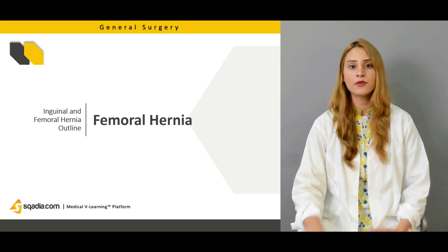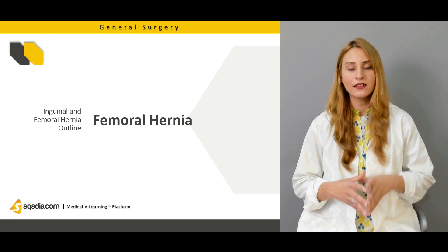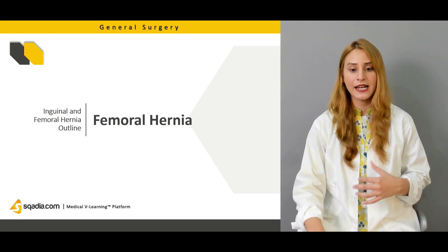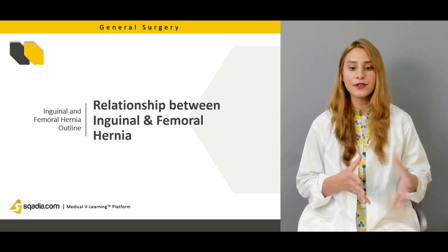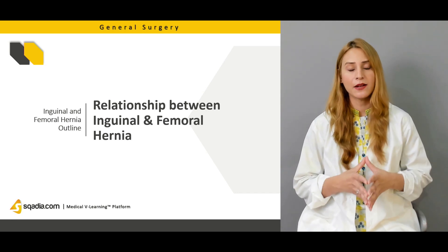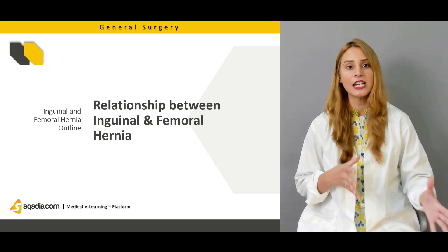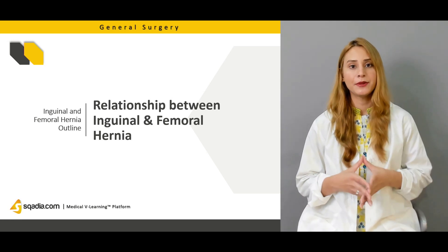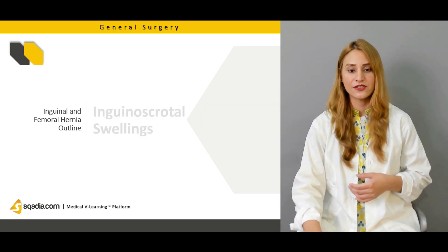We'll talk about femoral hernia in detail — the location, the femoral triangle, the contents of the femoral triangle, how a femoral hernia is produced, and how a patient presents with femoral hernia. We'll also cover the relationship between inguinal and femoral hernias, because they're both in the inguinoscrotal region and you need to differentiate them: one is above and lateral to the pubic tubercle, and one is below and medial to the pubic tubercle.